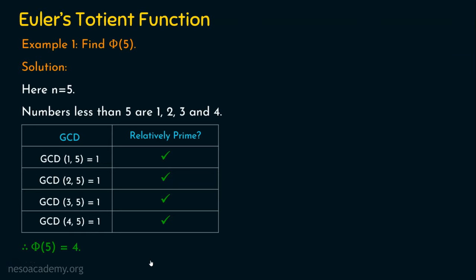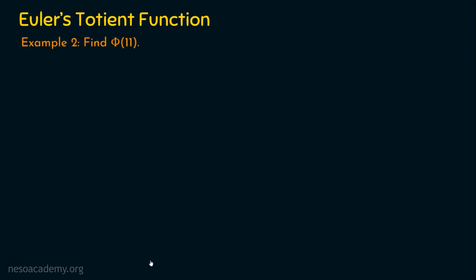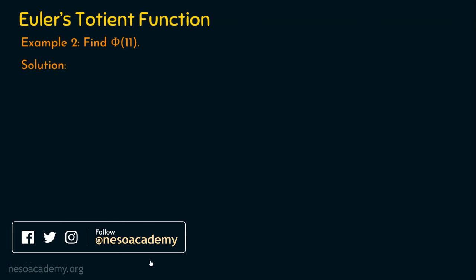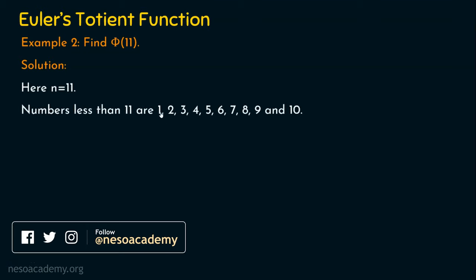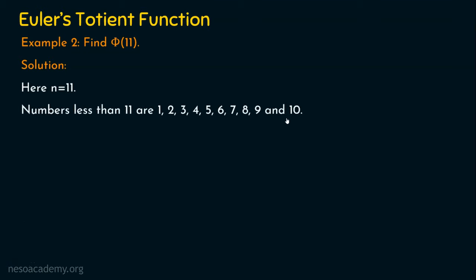Let's see another example to get more clarity. In this example, we are going to compute phi of 11. The given data is n equal to 11. We are going to find how many numbers less than 11 are relatively prime to 11. The numbers less than 11 are 1, 2, 3, 4, 5, 6, 7, 8, 9, and 10.